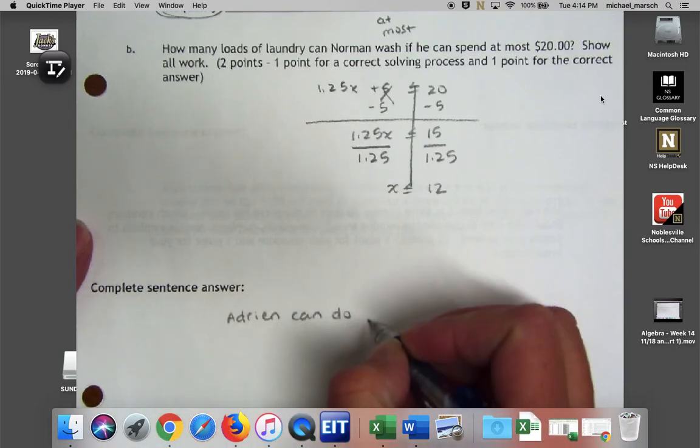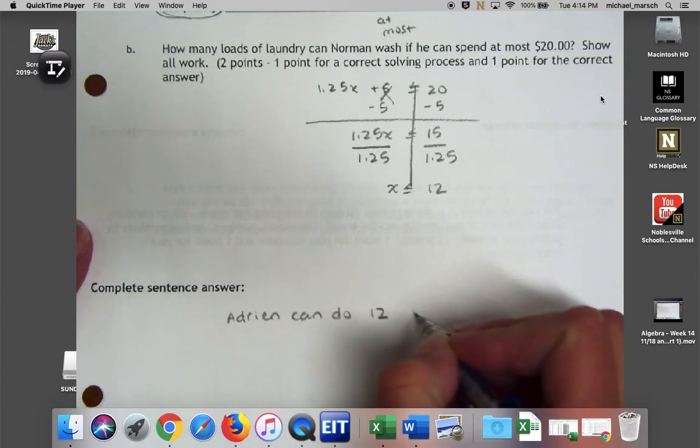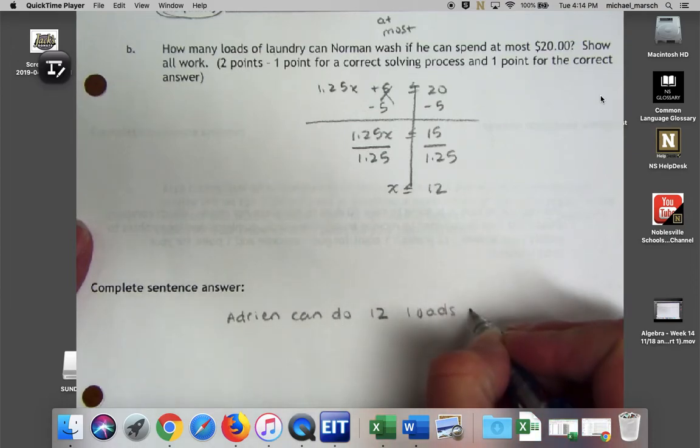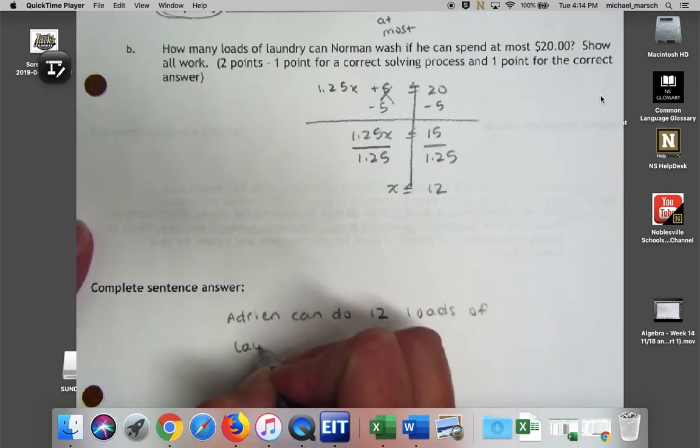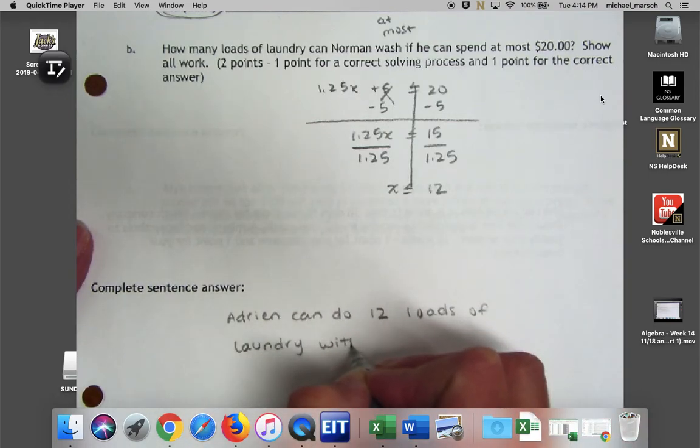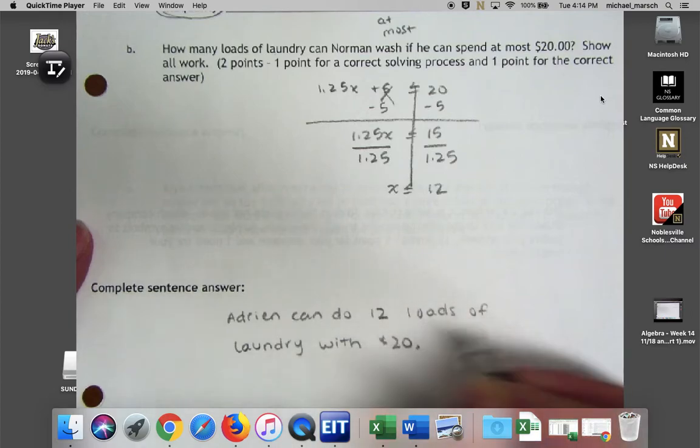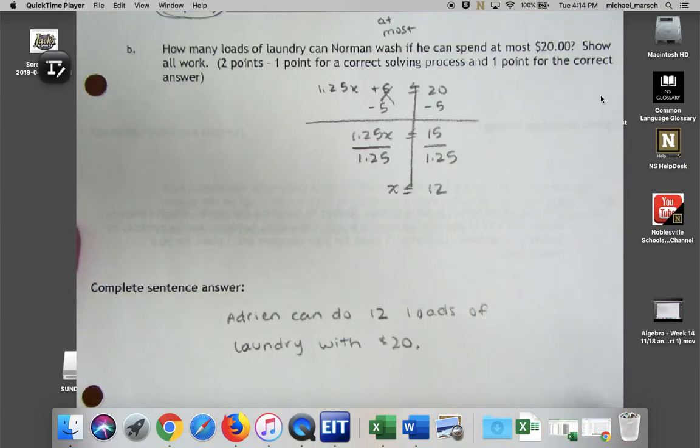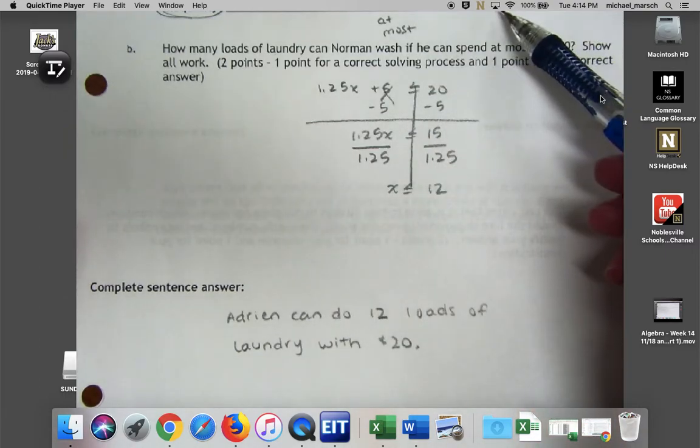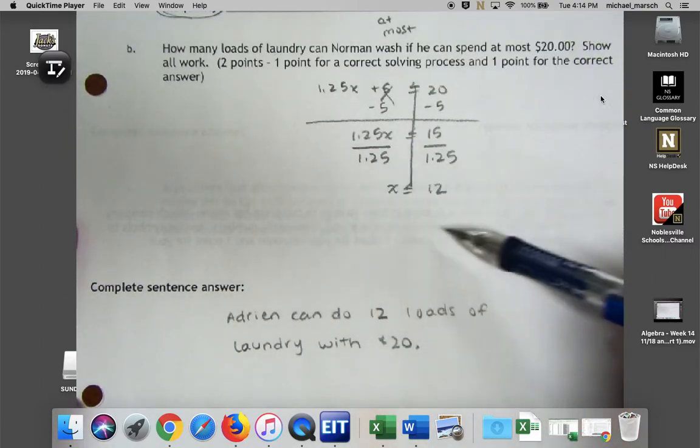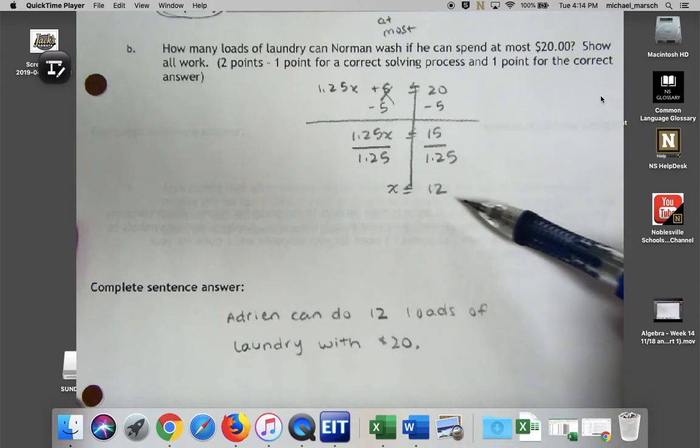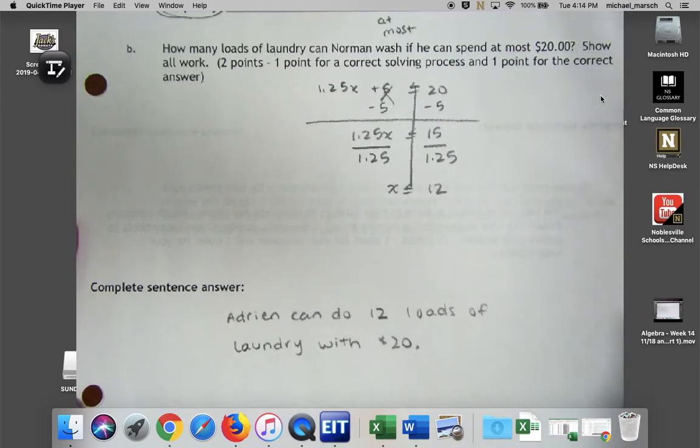Then I have to go down here to complete sentence. What does that actually mean? This means that Adrian can do 12 loads of laundry with the $20 that he has. Okay, so there's my answer. So I identified the variable, created the inequality, solved it, and then interpreted what this 12 stood for, what does it mean in the context of the story.